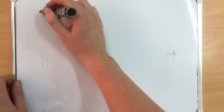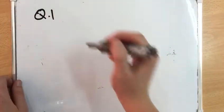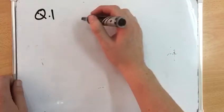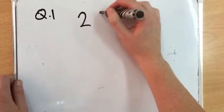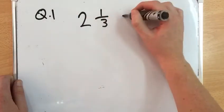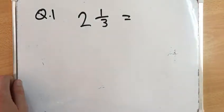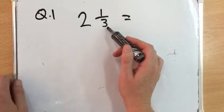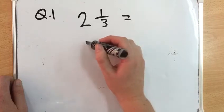If we look at question 1 today, we can see that we're trying to turn 2 and 1/3 into an improper fraction. How we do this is we take the denominator and multiply it by the whole number.